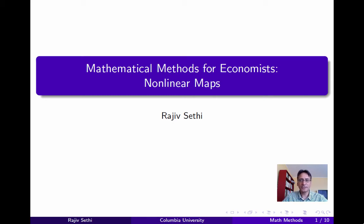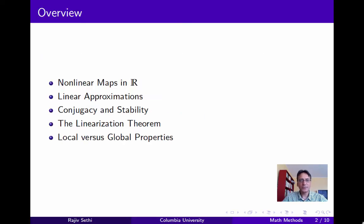We've been discussing discrete dynamical systems, but to this point the focus has been mostly on linear systems. Now a market economy is far too complex an object to be described reasonably well by a linear model, so in this segment we'll begin a discussion of non-linearity. We'll start with the simplest case of non-linear maps that are one-dimensional, and see how these can be analyzed by using linear approximations, at least in the neighborhood of a fixed point.